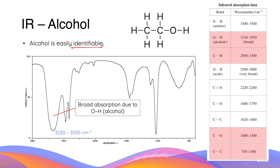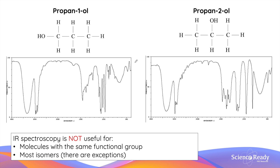Alcohols are easily identifiable in infrared spectroscopy due to the presence of a broad major absorption from the O–H bond in an alcohol molecule. This absorption occurs between 3230 and 3550 per centimeter wave number, and is characterized by a broad absorption signal on the far left-hand side of the spectrum. It is important to understand that while infrared spectroscopy is very useful for identifying different functional groups, it is not useful for distinguishing molecules with the same functional group. For example, propan-1-ol and propan-2-ol produce very similar infrared spectra. As these are position isomers, infrared spectroscopy is generally not useful for distinguishing most isomers, since most isomers contain the same types of covalent bonds.